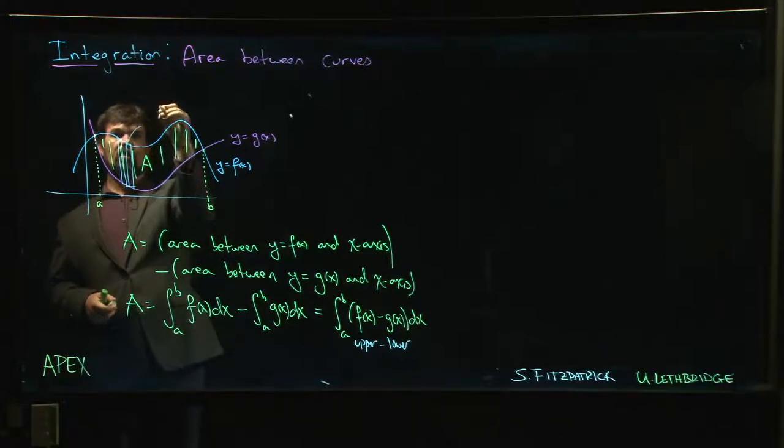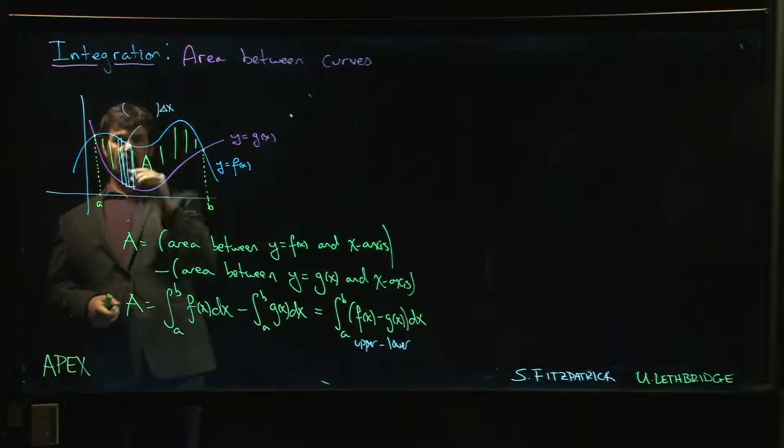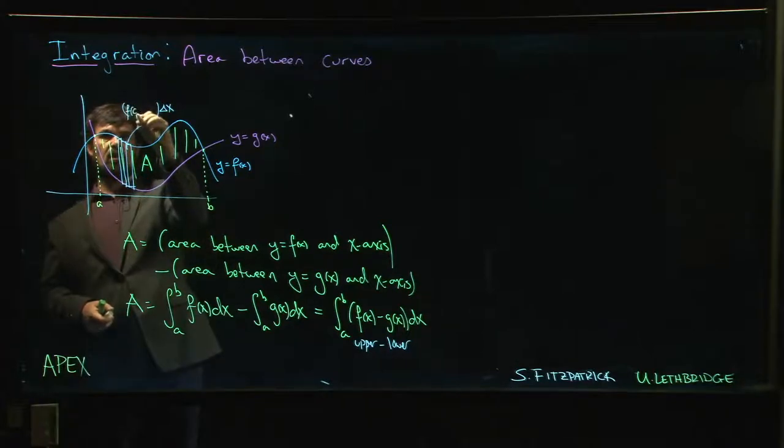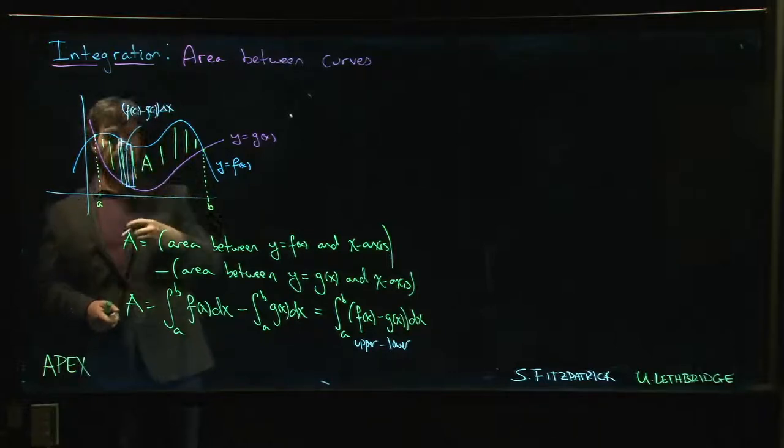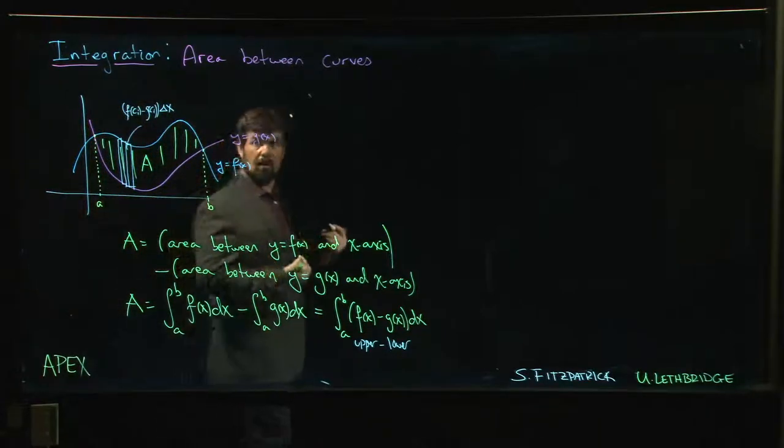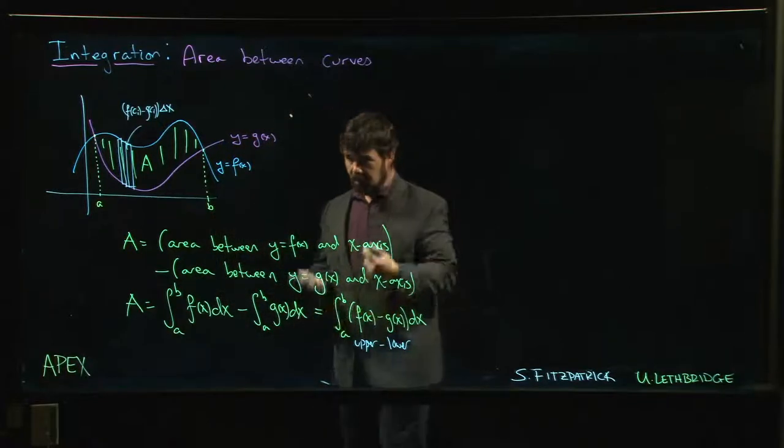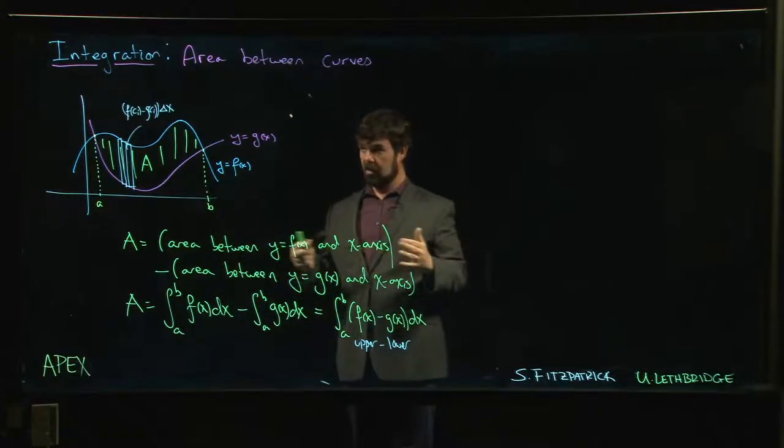Each rectangle is going to have a width of delta x, and the height of the rectangle is going to be the distance between this point and that point—but that's just f at some point minus g at that same point. So you could make that Riemann sum argument if you want to come up with that formula. There are a number of ways to realize that this is the way to do it.